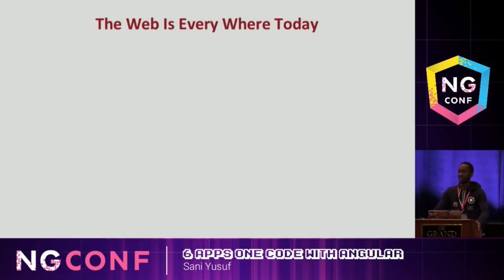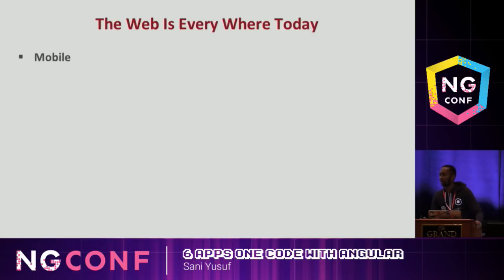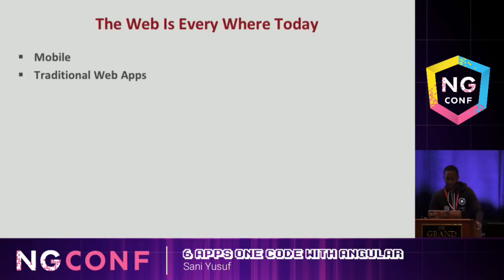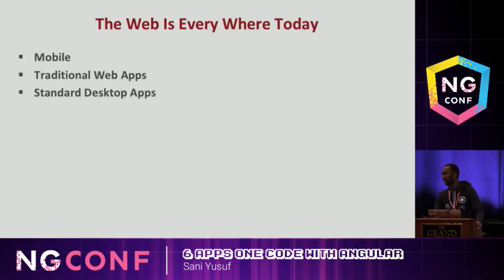So the web is everywhere today. Like everywhere. You go mobile, you'll see the web. The web is firing mobile today - your mobile apps, your mobile web apps, a lot of all these things. Traditional web applications is so crazy. In 2018, we have to use the word 'traditional web applications' to convey meaning - that's how far we've come. Basically if you have to sit down on a chair somewhere and have a big screen in front of you, that's a traditional web application - a standard desktop application.